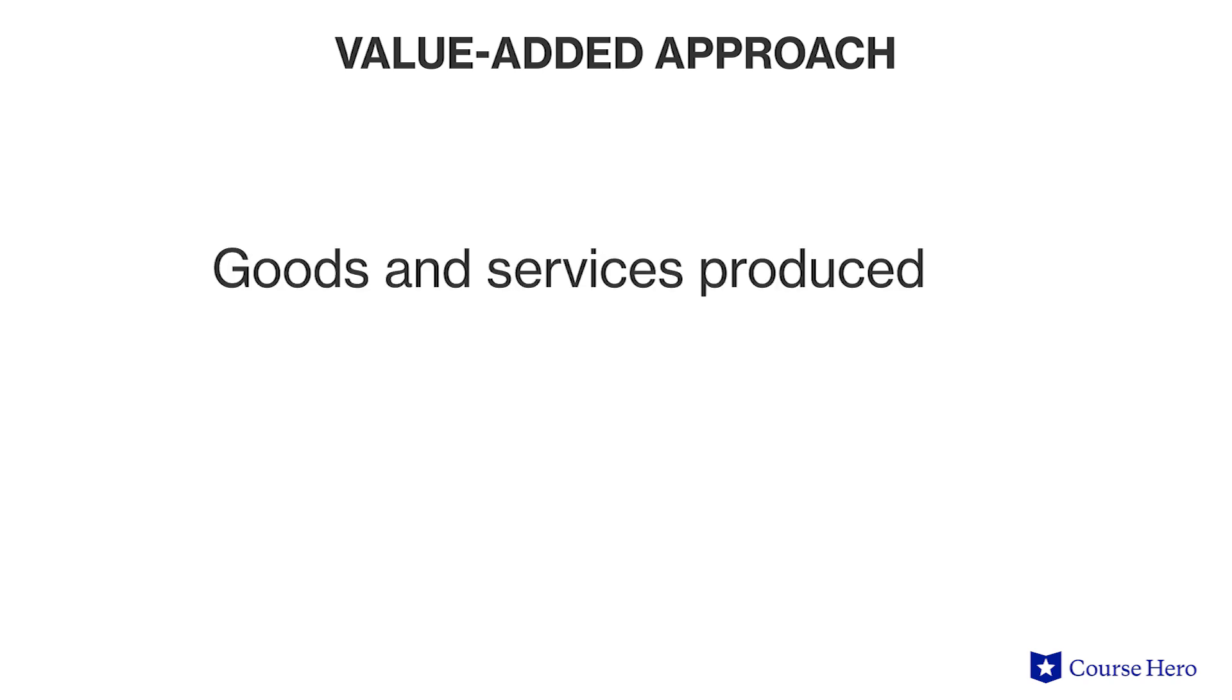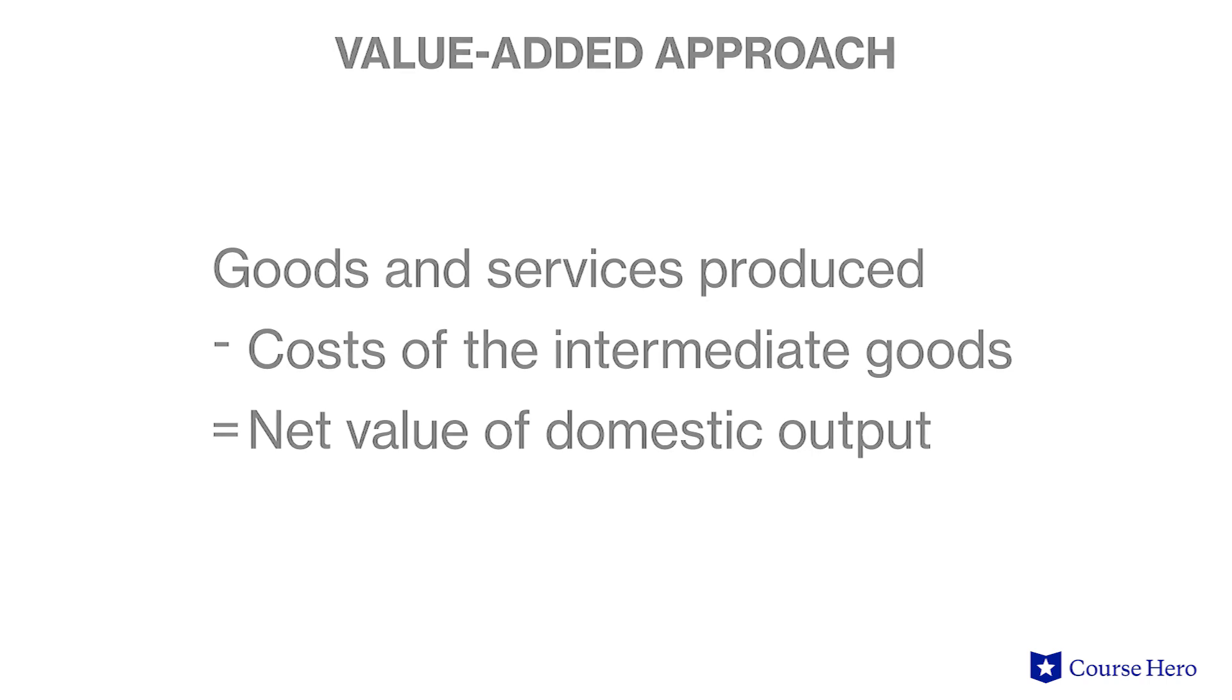When economists use the value added approach, they estimate the gross value of domestic output by adding the value of all goods and services produced within the country's borders, whether the goods or services are intermediate or not. Then, the cost of the intermediate goods used to produce the final goods and services are deducted from the final value to obtain the net value of domestic output.